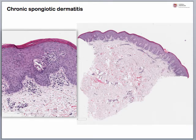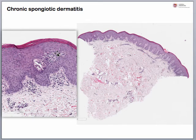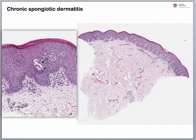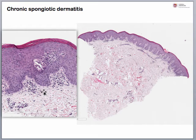Starting with our first case — this one's a little bit tricky. From low power, we see a predominantly psoriasiform pattern. However, when we look at it on higher power, we can see that there's parakeratosis on the top, a retained granular layer, and mild spongiosis, which you can see with the little white lines in between the keratinocytes — basically edema in the epidermis pulling the keratinocytes apart. And then we have an inflammatory infiltrate with eosinophils. All of these things taken together give you a chronic spongiotic dermatitis.